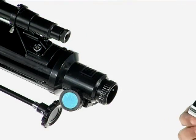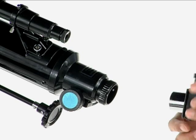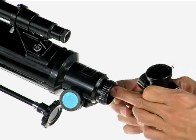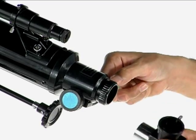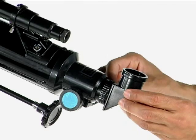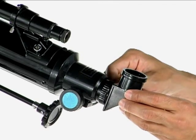Now our final step will actually be to connect the diagonal, which is this little piece right here, into the back of your telescope. You just want to remove the threading on this little screw. It slides right in. And you tighten it.